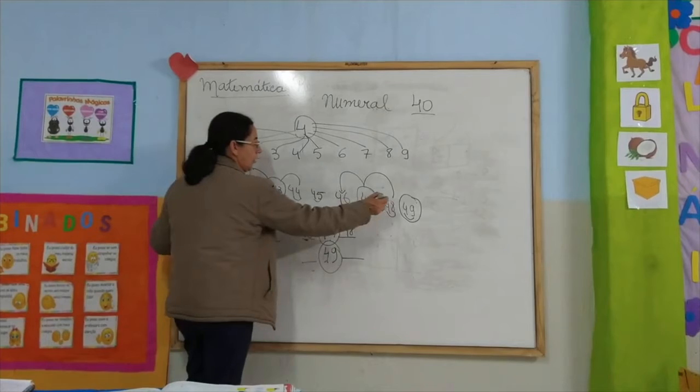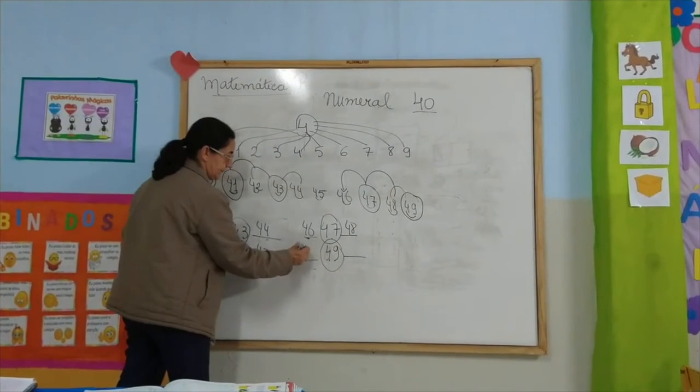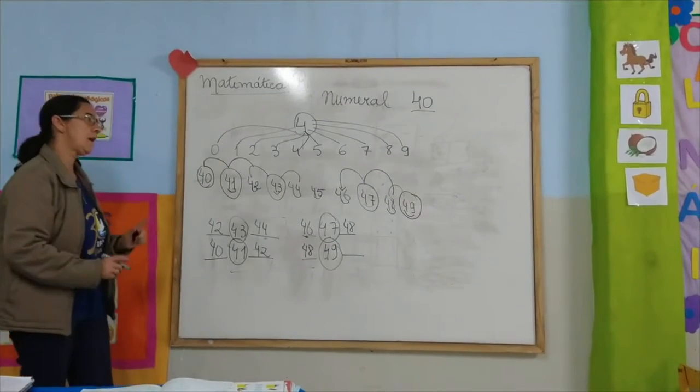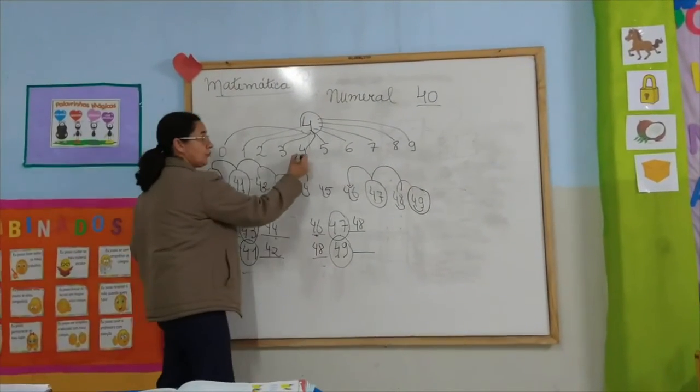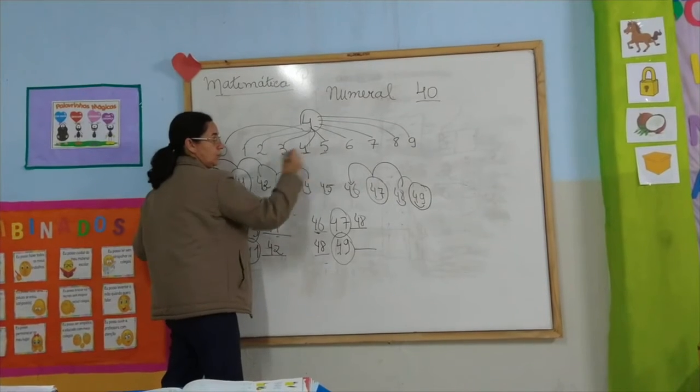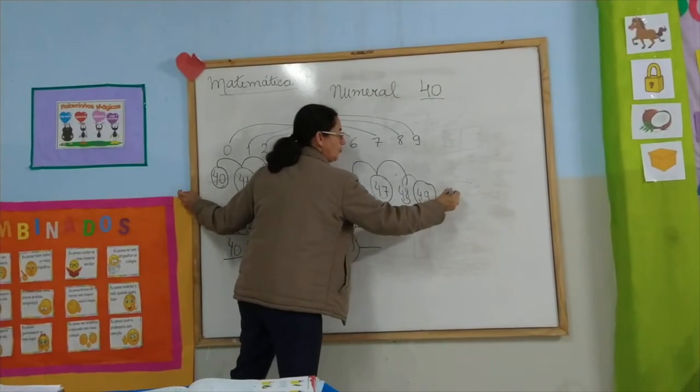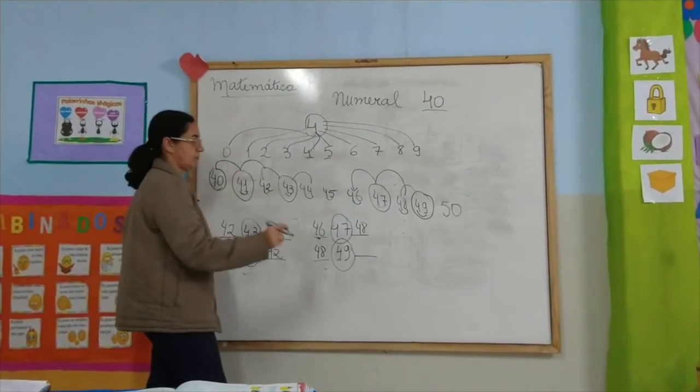E o 49: quem mora antes de 49, 48. E quem mora depois, veja só que interessante. Depois do número 4, vem quem? O número 5. Então, depois de 49, é o número 50, que a gente vai estudar depois.